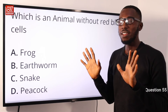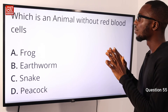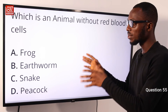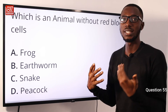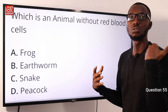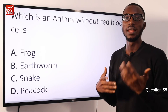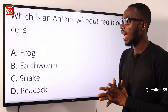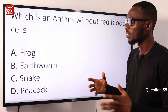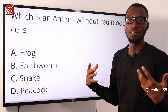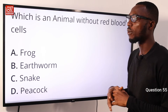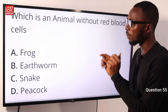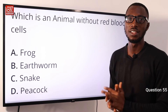Question 55: Which is an animal without red blood cells? The correct option is earthworm, because it is able to breathe through its skin surface and due to its relatively less active style of living, the oxygen taken from the environment is enough for its sustenance. So option B, earthworm, is the correct option.